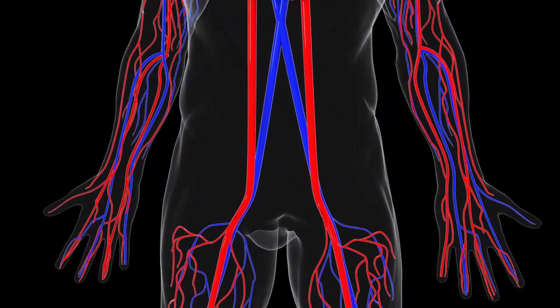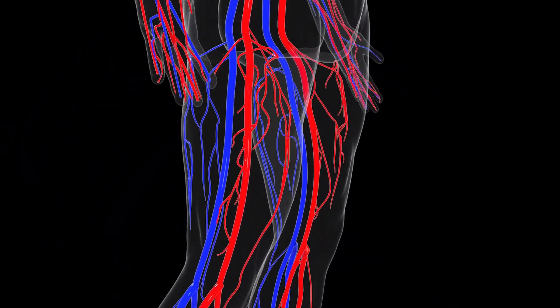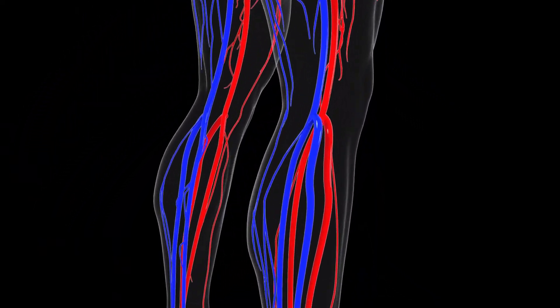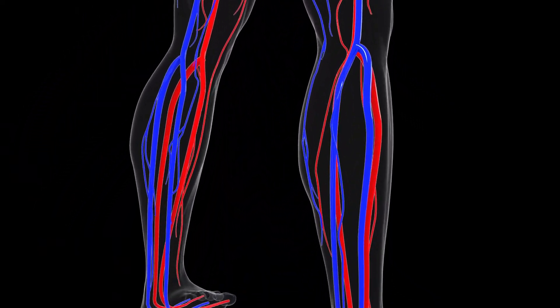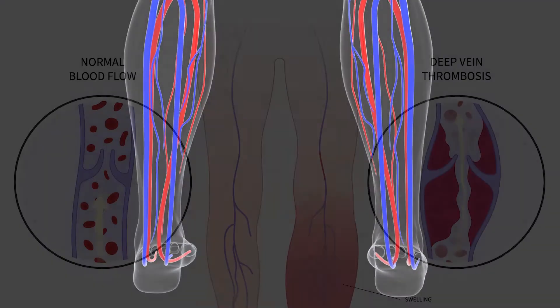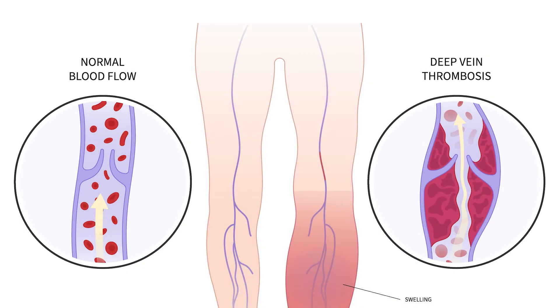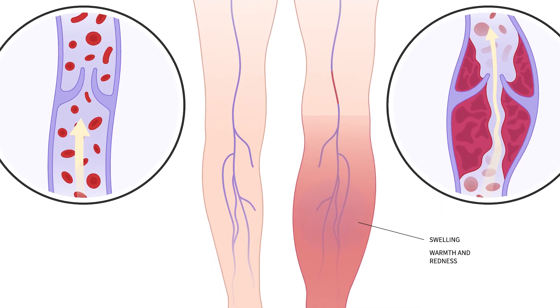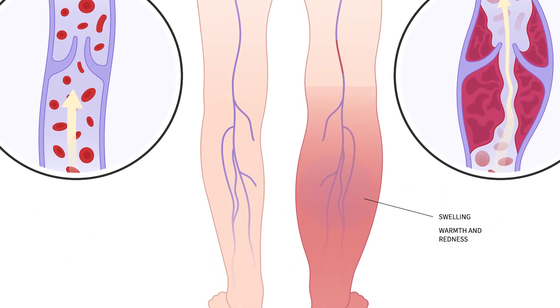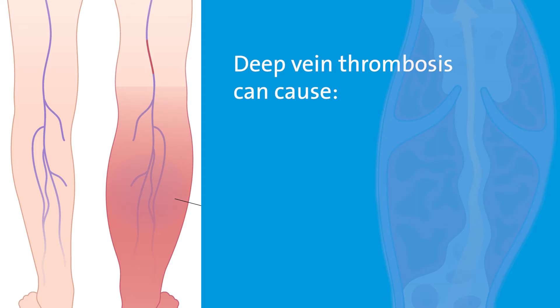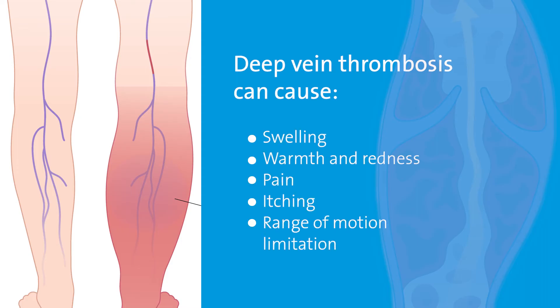This is also true for thrombectomy of the lower extremities, in that it prevents the occurrence of something known as post-thrombotic syndrome. This is when acute or fresh blood clot, which originally is soft and compliant, becomes fibrous tissue or functionally scar. It can cause swelling, pain, redness, skin color changes, itching, and even range of motion limitation.